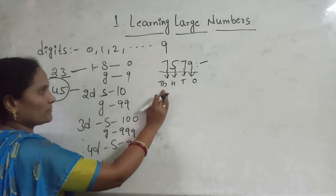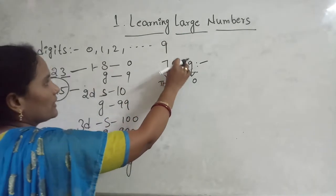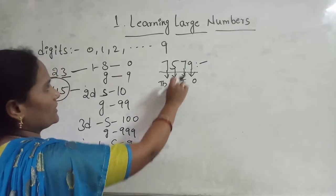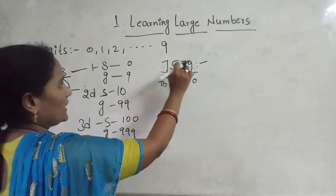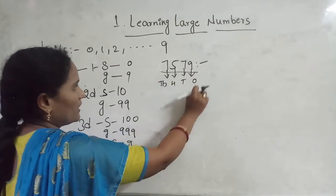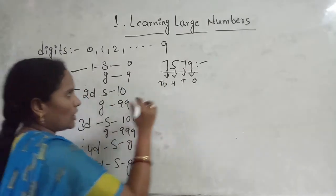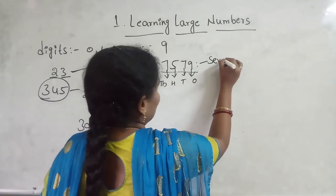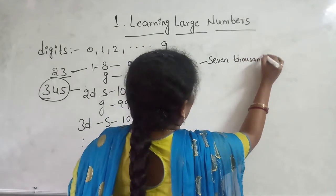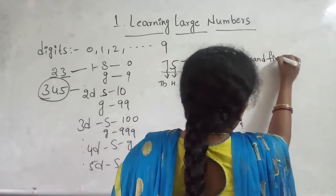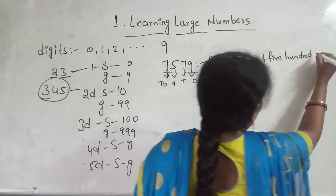In thousand place, which number is there? Seven. So, seven thousand. In hundred place, which number is there? Five. So, seven thousand five hundred and don't read seven tens, nine ones. Seven thousand five hundred and seventy-nine. We are writing now, seven thousand five hundred and seventy-nine.